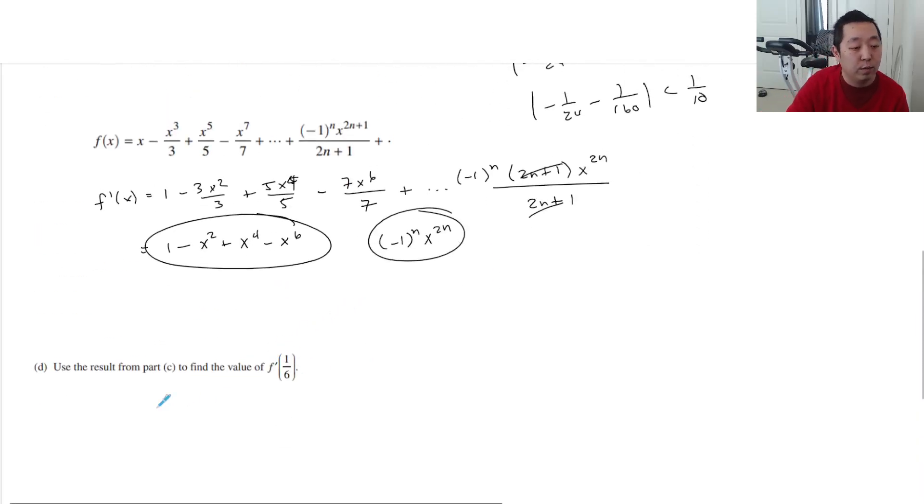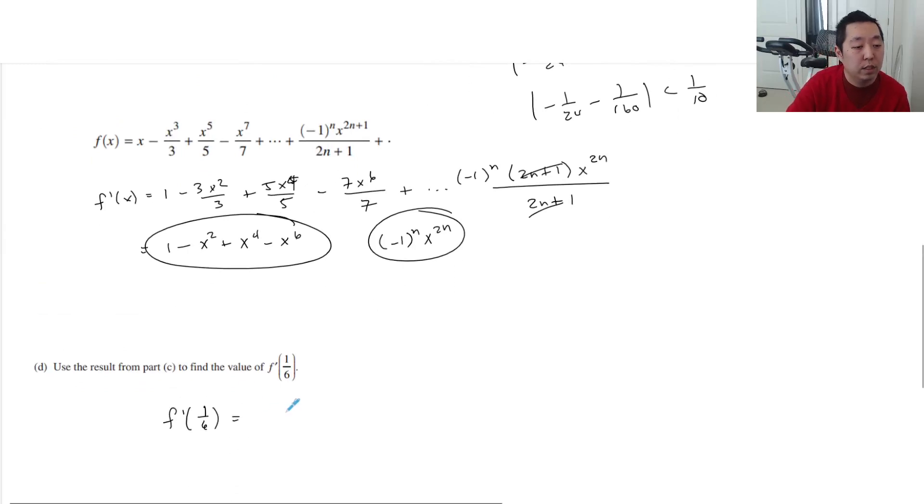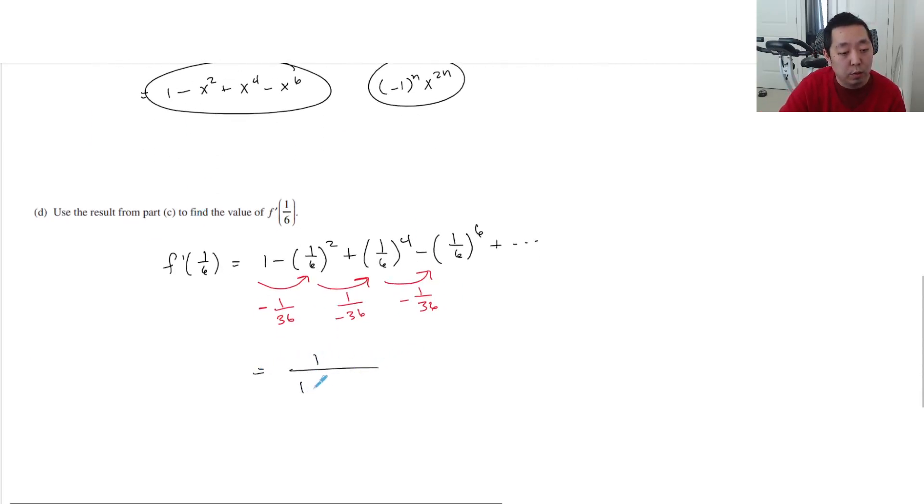And then use the result from part C to find the value of f prime of 1/6. So f prime of 1/6. Do they just want you to use the first four non-zero terms? I'm not entirely sure. The series that represents f prime of x. Oh, it's a geometric series, I see. It's a geometric series. I've never seen them actually do a sum on a geometric series. It's kind of interesting. So I'm going to multiply by 1 over 36, right? Negative 1 over 36, right? So it's a geometric series. So to find an exact sum for it, I would say it's the first term over 1 minus r, but r is negative 1 over 36. So that's 1 over 36 over 37 over 36. And so that is 36 over 37.